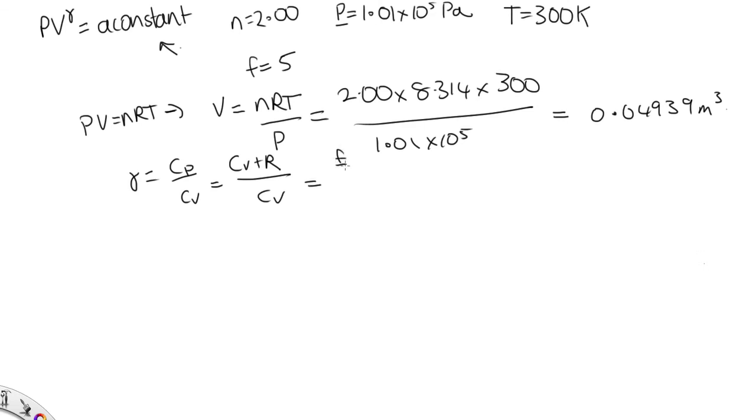Now, CV is F over 2R plus R over F over 2R. Our R's will cancel out. And we end up with F plus 2 over F. And we've seen that F is 5. So this is 7 over 5, which is 1.4.